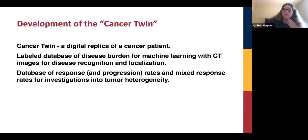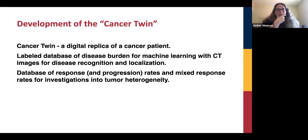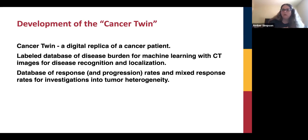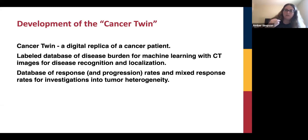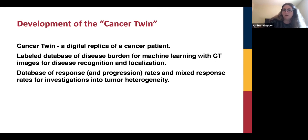What we are endeavoring to do is really dig into the idea of a cancer twin — a digital replica of a cancer patient. For us, this means generating a labeled database of disease burden across all different cancer types, capturing this for every cancer type and every type of patient, including general patients not on cancer trials. If you could do that, you'd have a database of response and progression rates and mixed response, and you could start looking at how patients in certain subpopulations respond to chemotherapy for different cancer types — something you really can't do now.